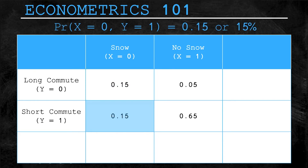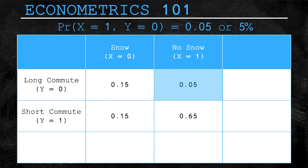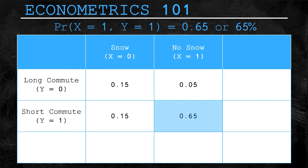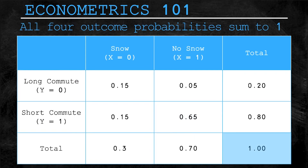The second outcome, X equals zero and Y equals one, represents a short commute with snow, also expected to happen 15% of the time. The third outcome, X equals one and Y equals zero, represents a long commute with no snow, expected to happen 0.05 or 5% of the time. The fourth option, X equals one and Y equals one, represents a short commute with no snow, expected to happen 0.65 or 65% of the time. These four outcomes are mutually exclusive, make up the entire sample space, and therefore all probabilities sum to one.